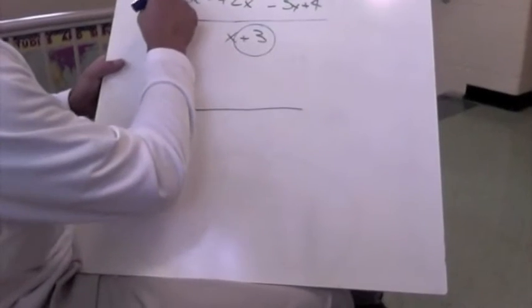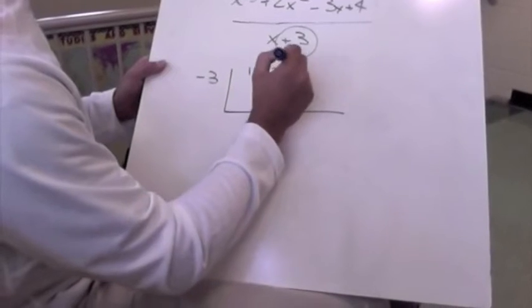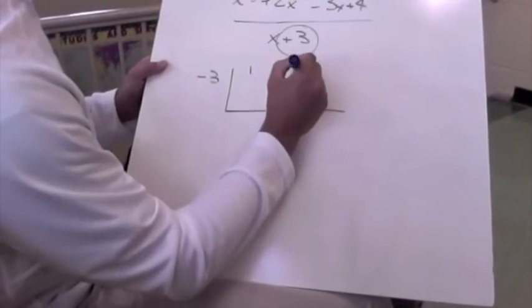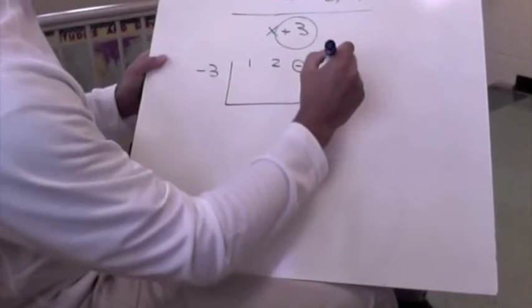So since there's no coefficient, it's just 1. So we have 1, and then for our squared, it's 2. Then for our regular constant, it's negative 3. Be sure to keep that negative sign, and then our remainder is going to be 4.